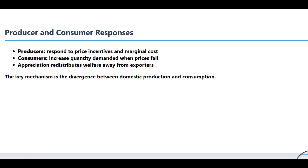This table gives us a perfect summary of these distributional effects. Domestic producers are the clear losers from a currency appreciation — they face lower prices, so they reduce their output. Domestic consumers, on the other hand, are the clear winners. They get to enjoy lower prices and increase their consumption.